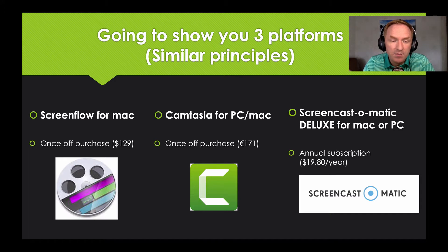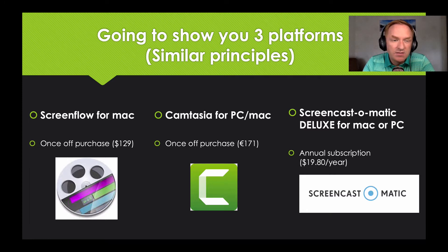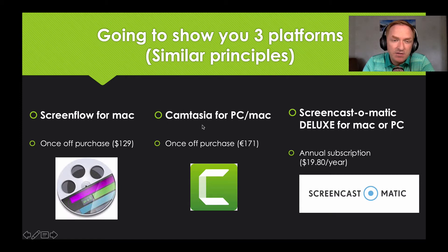First, I'm going to show you ScreenFlow for Mac — it's Apple software at $129 for a one-off purchase. This is what I use on my MacBook Pro; I find it really helpful and very easy to follow. Even if you don't use Mac, I'd still recommend watching this clip to see the principles of video setup and merging, because many of the principles are the same across different software packages. There's also one for PC and Mac called Camtasia — very user friendly, does exactly the same things, at $171 for a once-off purchase, though you can get discounts down to about 100 euro.